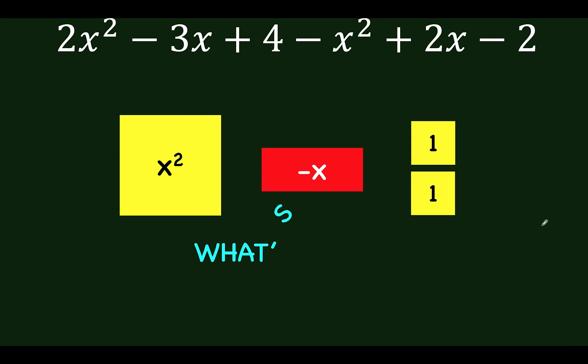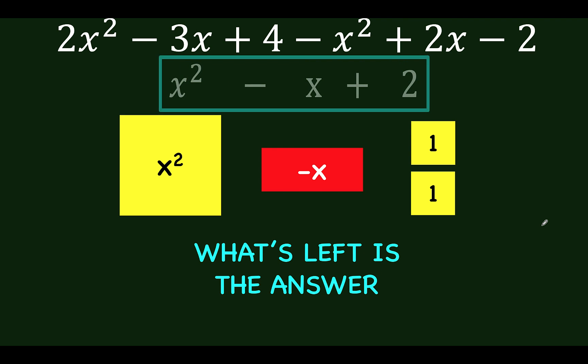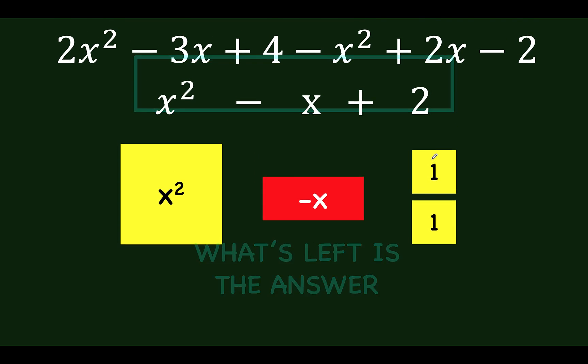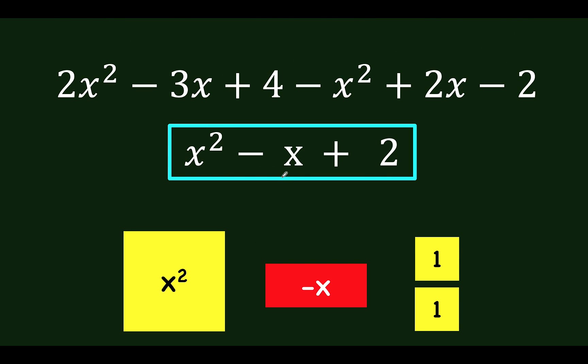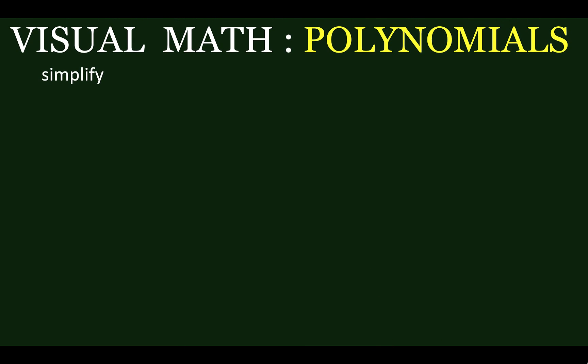Now, what's left would be our final answer. So here, we have 1x squared, we have 1 negative x, and we have 2. So our final answer is x squared minus x plus 2 for this given polynomial. Let's go to our second problem.